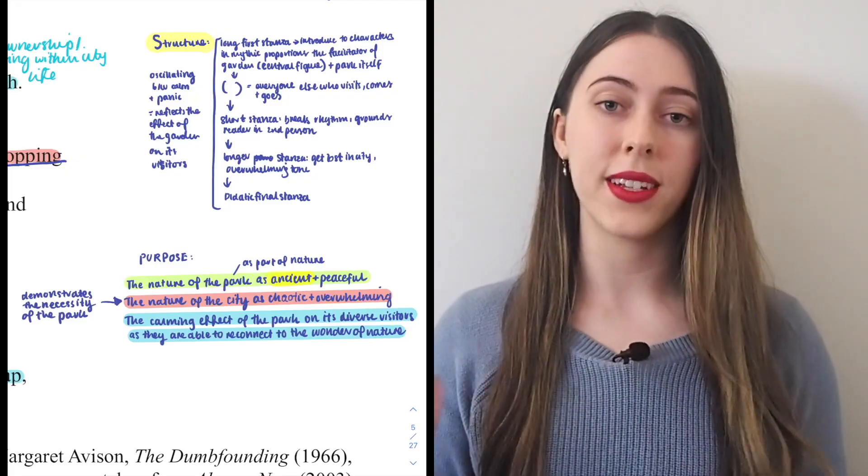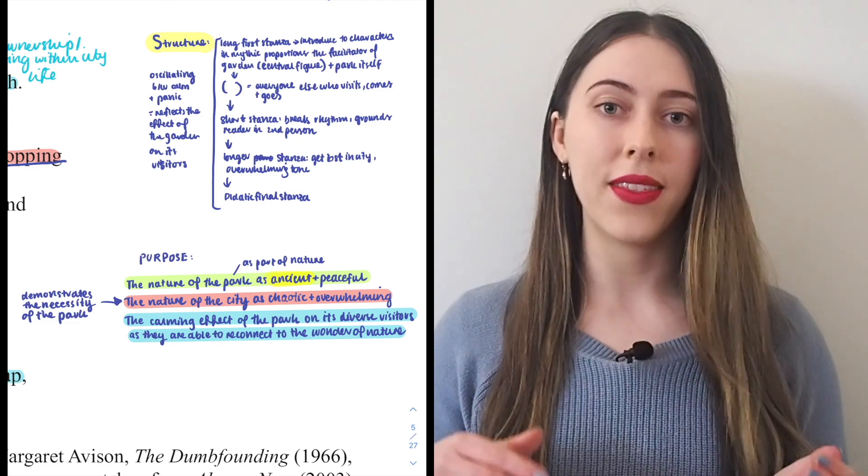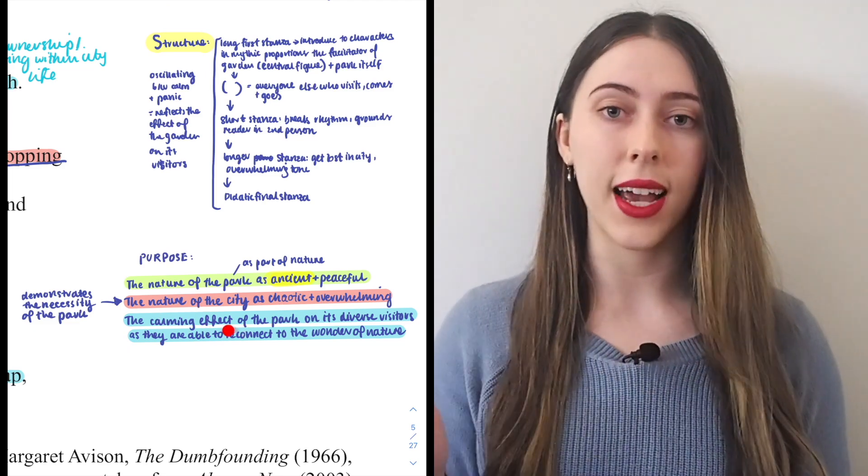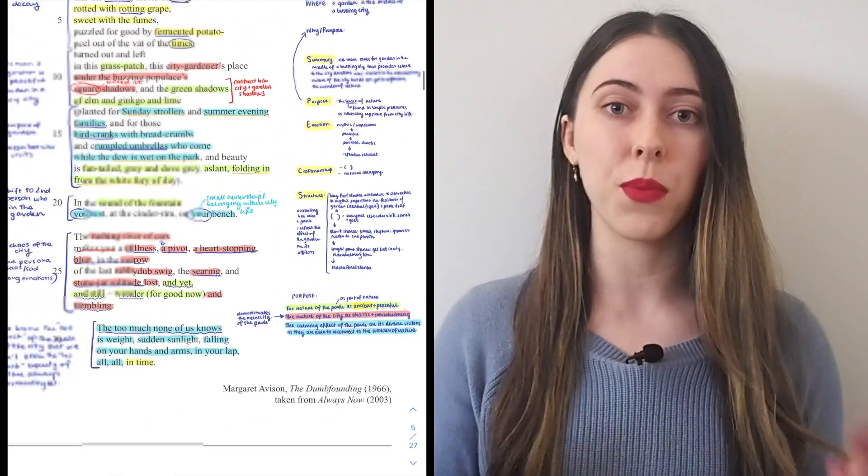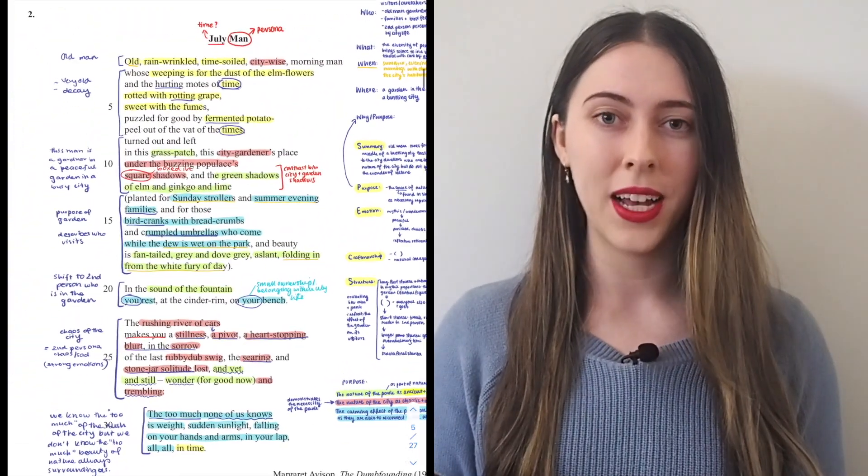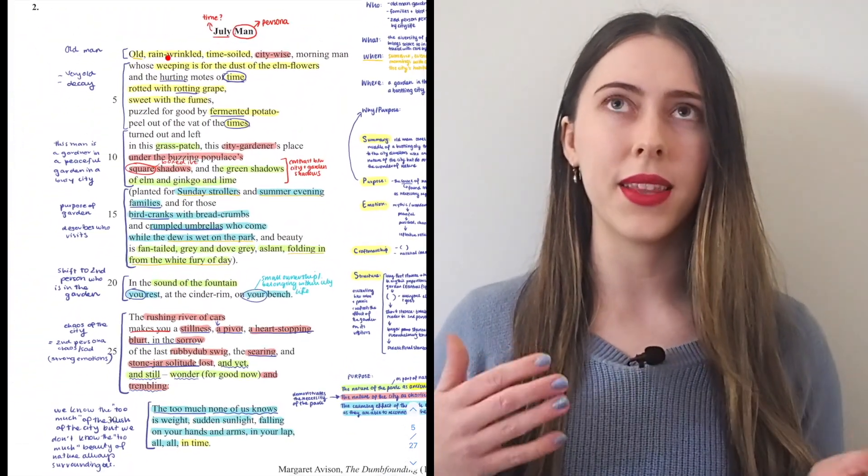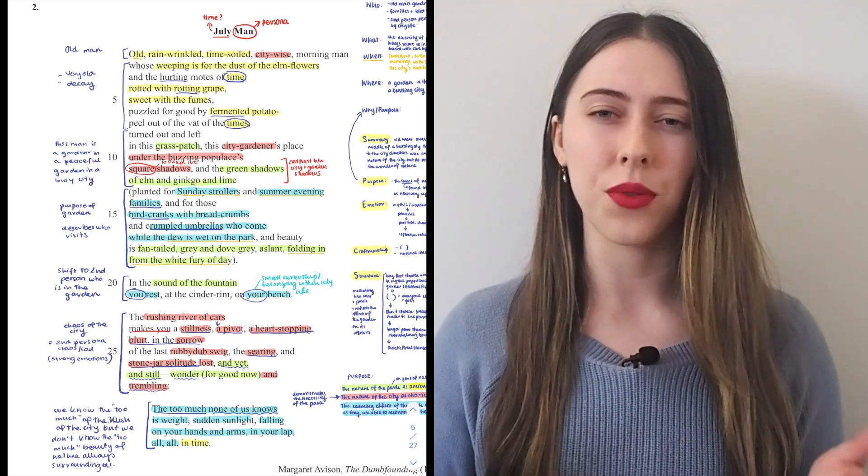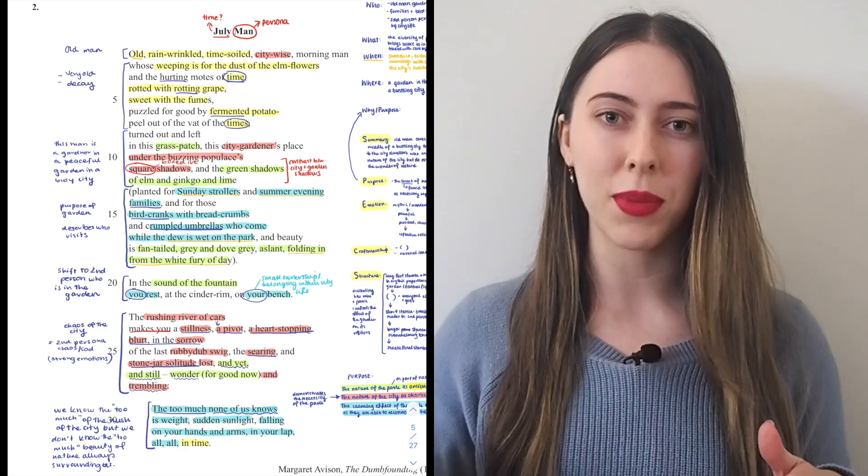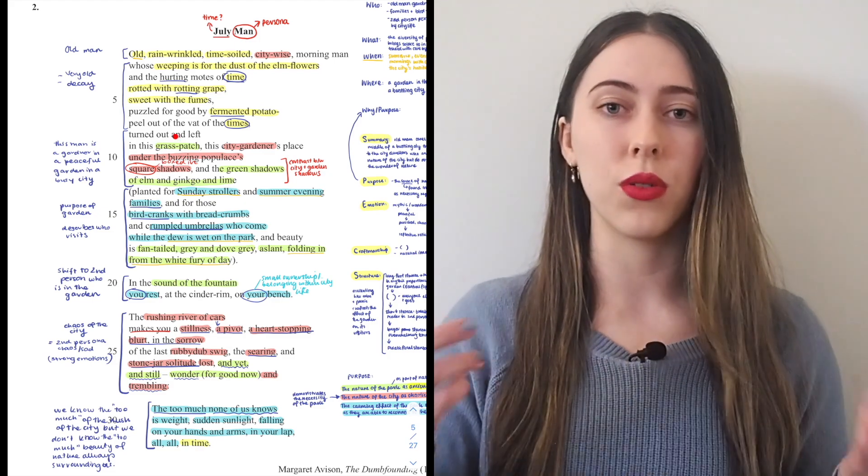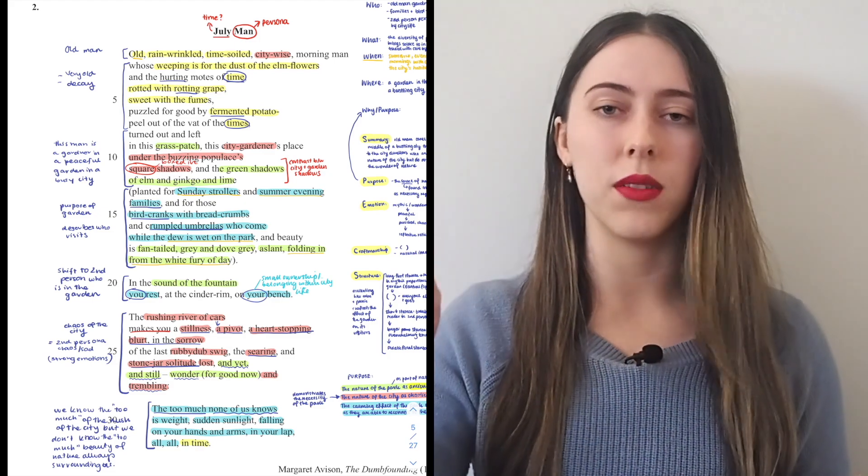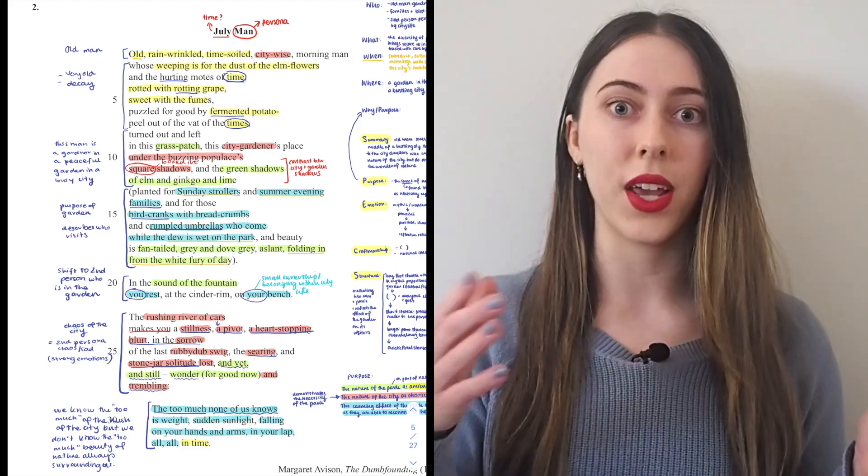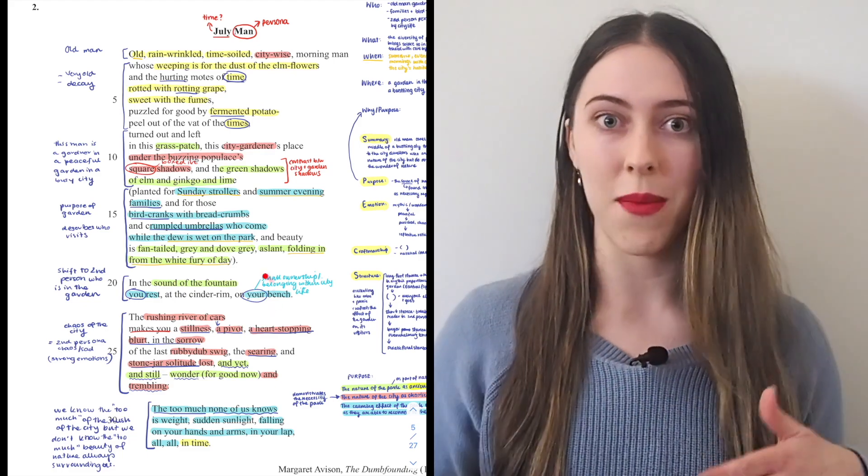Once I had decided on my themes, I would assign a color to each of them and then go through the text and highlight any quotes that I thought could support that theme in that particular color. I found this was really helpful because it meant that I didn't have to rewrite all of the quotes in my separate essay plan. Instead I could, for example, just look down the page and jump from one pink quote to the next knowing that they all were allotted to the same theme.